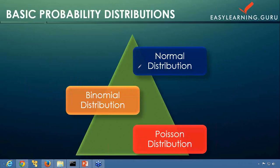Here let's just have an overview of each. Normal distribution gives you the range of the probability. Binomial distribution is used in cases where you have either success or failure — it will either be a success or a failure. Poisson distribution is used in cases where there is some time interval involved, where the event is going to happen within that time interval. These are the three basic probability distributions we'll be covering in detail in the following videos.